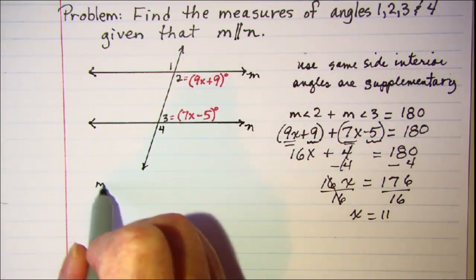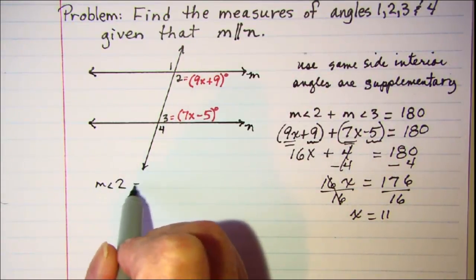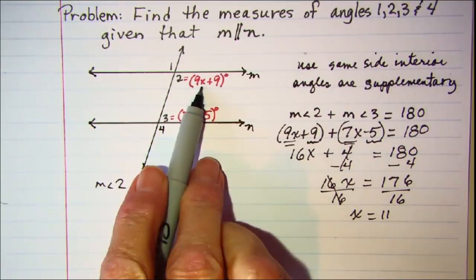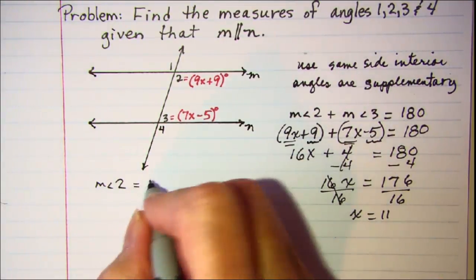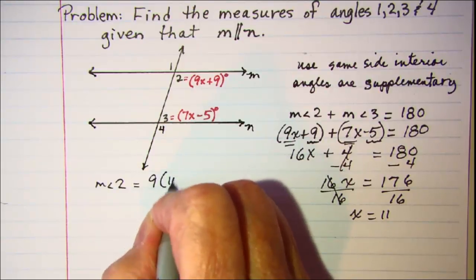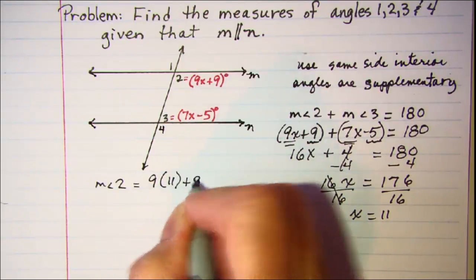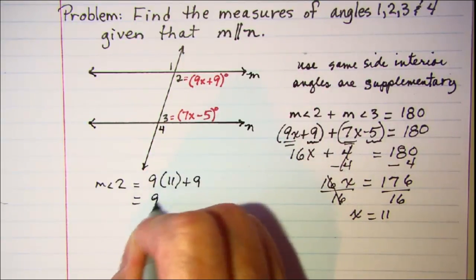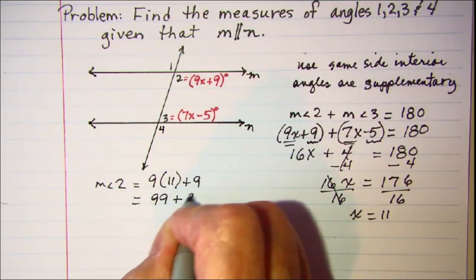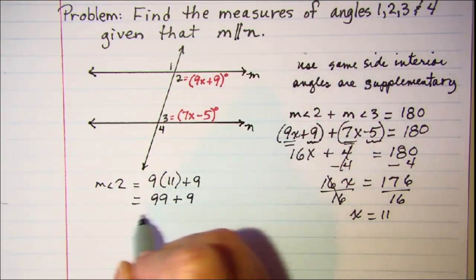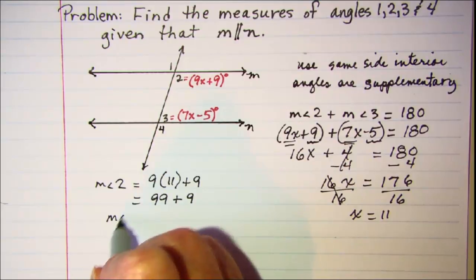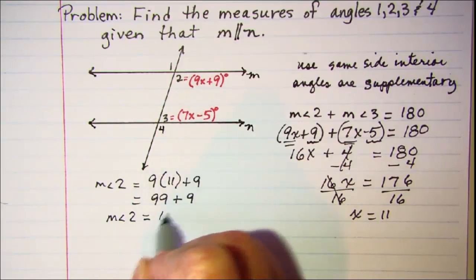Now if x is equal to 11, we can find the measure of angle 2 by substituting 11 in this expression for x. So we have 9 times 11 plus 9, this is 99 plus 9, which is 108. The measure of angle 2 is equal to 108 degrees.